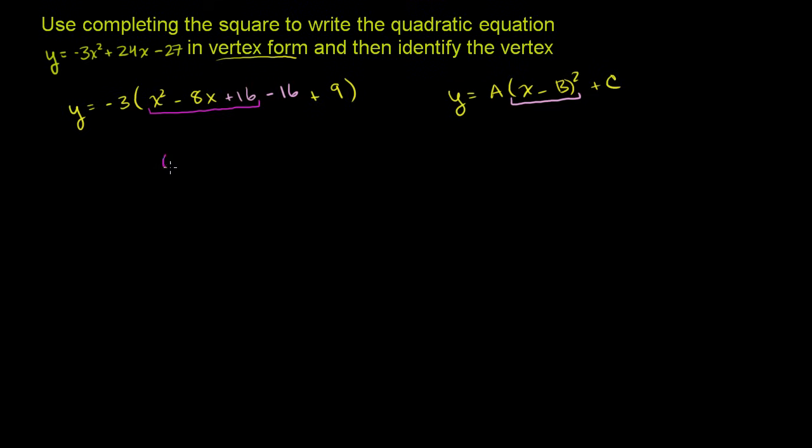That right there is (x minus 4) squared. And if you're confused, how did I know 16? Just think I took negative 8, I divided it by 2, I got negative 4, and then I squared negative 4. This is negative 4 squared right there. And then I had to subtract that same amount, so I don't change the equation. So that part is (x minus 4) squared. And then we still have this negative 3 hanging out there. And then we have negative 16 plus 9, which is negative 7.